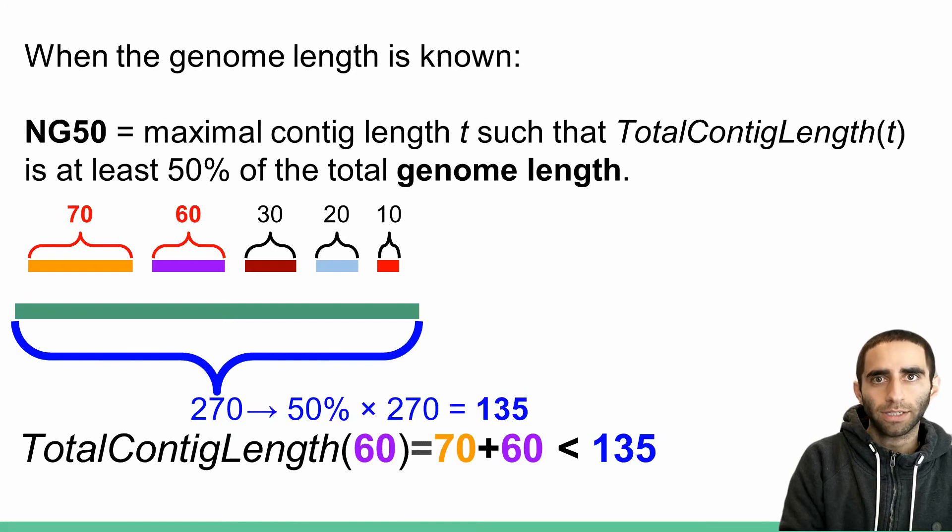which means that the total contig length of 60 is 60 plus 70, which is 130. This is less than half of my total genome length, which was 135, so I'm not done yet.